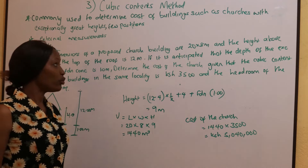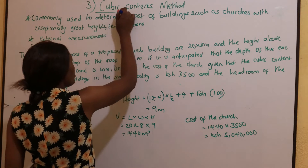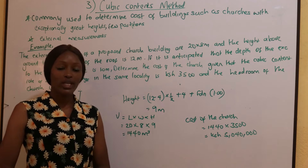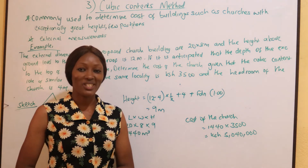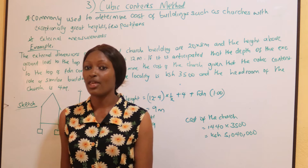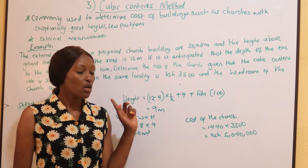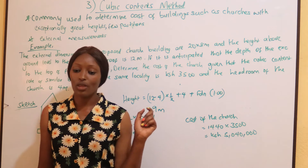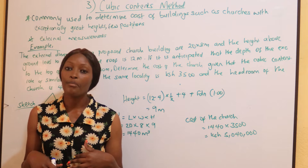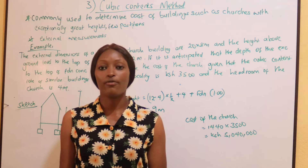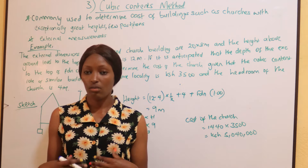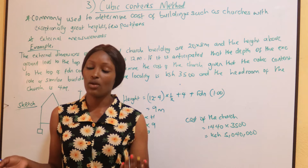Now we are going to look at the cubic content method — it's the third method of approximate estimations. We have been looking at the different methods of approximating estimations. We started with the functional unit method, then the floor area method, and now we are on the cubic content method. The more we continue looking at these methods, the more accurate they become. We are just coming from the floor area method, where we consider the floor area of a building.